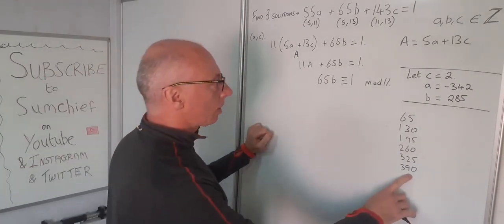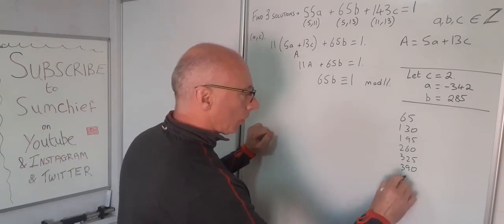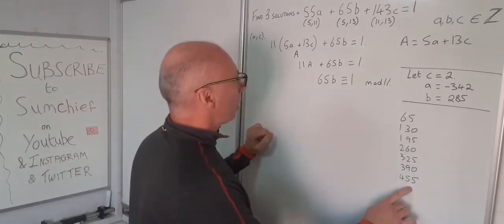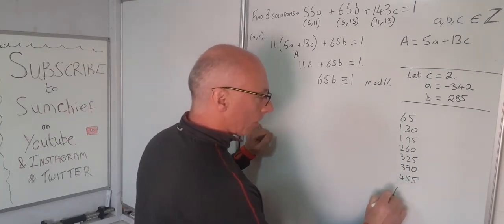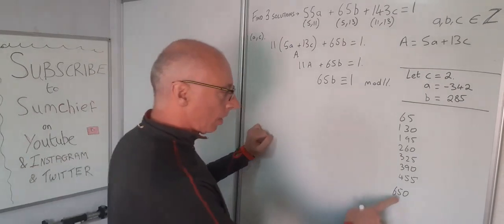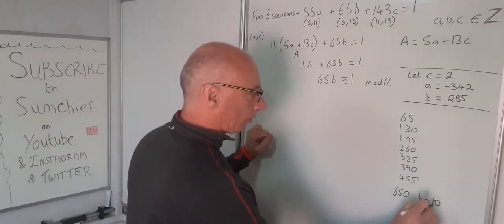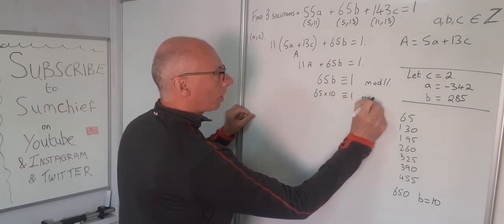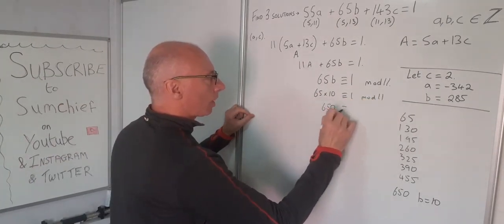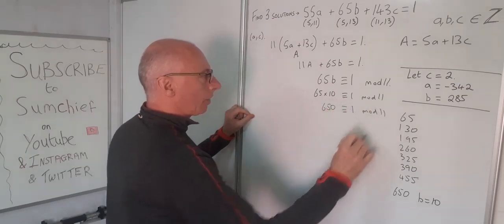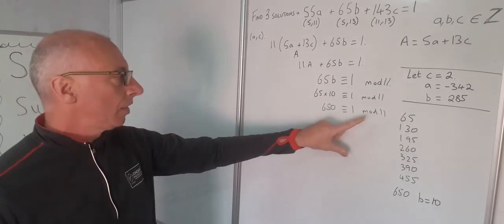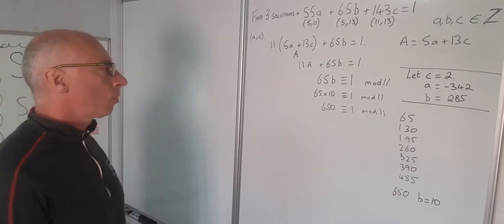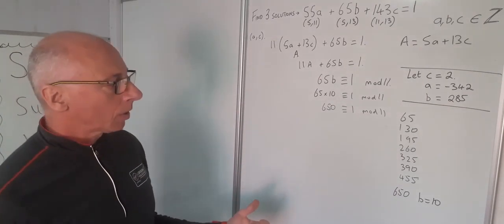Checking 390 gives 60 mod 11 — that's no good. Trying 455 — no good. Keep going. We can go all the way up to B equals 10, giving 650. I've seen that 660 is a multiple of 11, so 650 is congruent to 1 mod 11. I know 660 is a multiple of 11, and if I add 1 to 660 I get 661, so there's a difference of 11. Therefore this one works. So I'm going to let B equal 10.